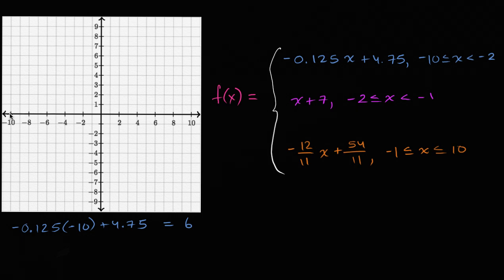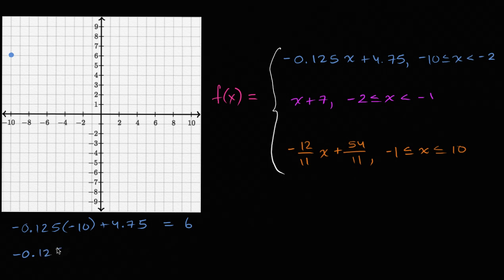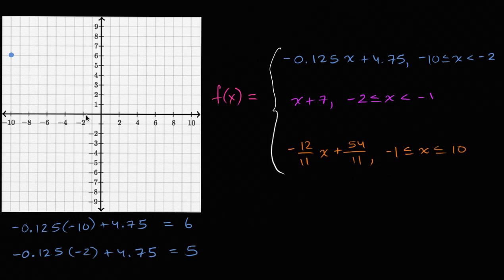So we're going to have the point negative 10 comma six, and x is defined there since it's less than or equal to. Then we go all the way to negative two. When x is equal to negative two, we have negative 0.125 times negative two plus 4.75 — negative times negative is positive, two times this is going to be positive 0.25 plus 4.75 — equal to positive five. We might be tempted to fill in this dot, but remember this interval does not include negative two, so I'm going to put an open circle there.